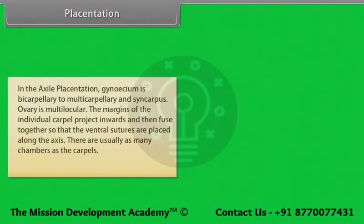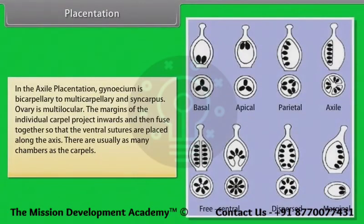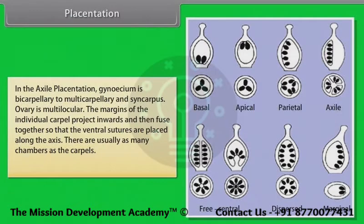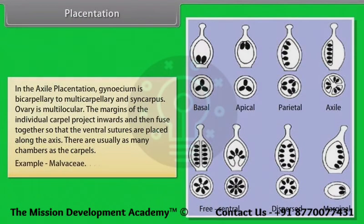In axile placentation, the gynoecium is bicarpellary to multicarpellary and syncarpous. The ovary is multilocular. The margins of the individual carpels project inwards and fuse together so that the ventral suture rays are placed along the axis. There are usually as many chambers as carpels. Example: Malvaceae.